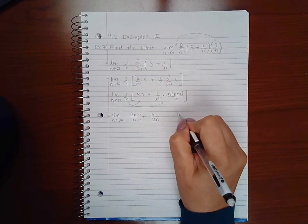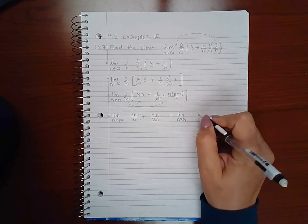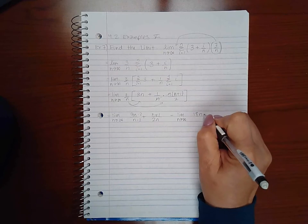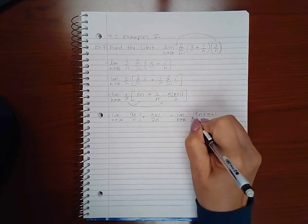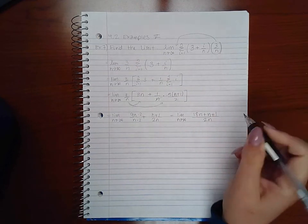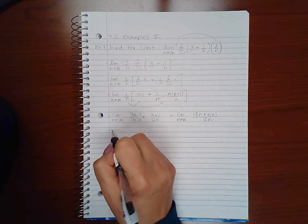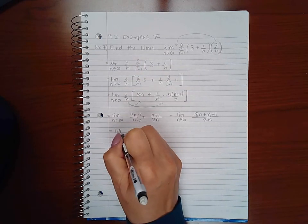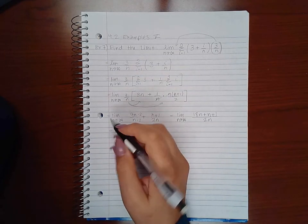And I get 18N plus N plus 1 over 2N. Now when I calculate I get the limit as N goes to infinity.